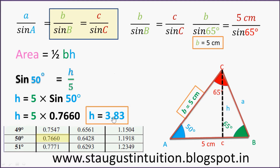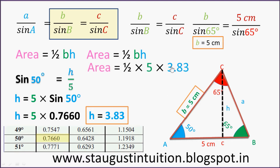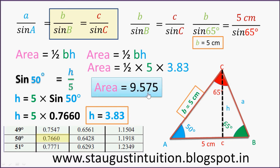So H is equal to 3.83 cm. Then using the area formula: Area equals half times B times H equals half into 5 into 3.83. You get the answer 9.575 square cm.